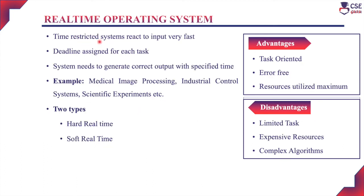Next, real-time operating system. These real-time operating systems are time-restricted systems that react with the input very fast. Each task will be assigned a deadline, and these systems have to complete the task within the specified time or deadline. The system needs to generate the correct output within the specified time, otherwise it may fail. Examples: medical image processing, industrial control systems, scientific experiments, etc. There are two types of real-time systems: hard real-time systems and soft real-time systems. Hard real-time systems, otherwise called critical restrictive systems, must execute each task within the specified deadline — otherwise it may cause permanent damage to the system. Soft real-time systems are less restrictive systems where missed occasional deadlines are acceptable; if a task cannot be completed within the time limit, we can reschedule the task and it won't cause permanent damage to the system.